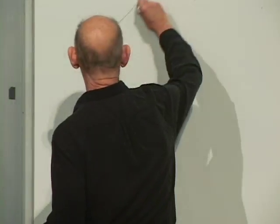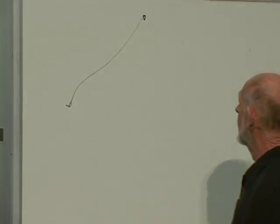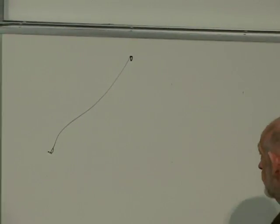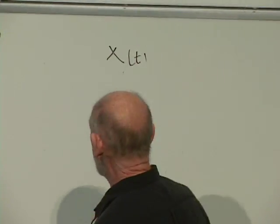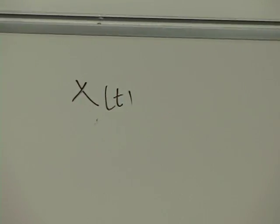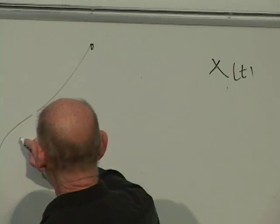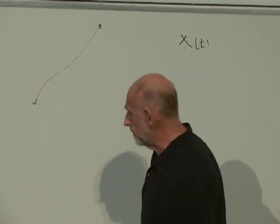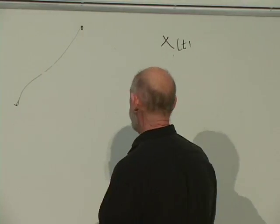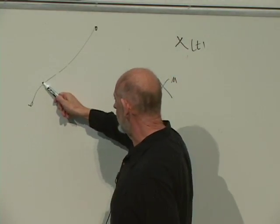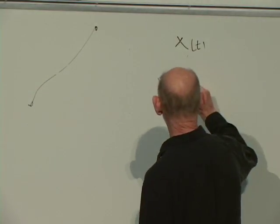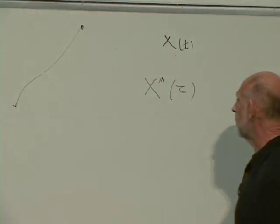First, let's do something simpler and talk about an ordinary particle. An ordinary particle in classical mechanics has a trajectory. In both non-relativistic and relativistic physics, the trajectory can be described by the three-dimensional position x as a function of t. In relativity, it's more convenient to take all four components — space and time — call them x^mu, and think of them as a function of tau, the proper time along the trajectory.